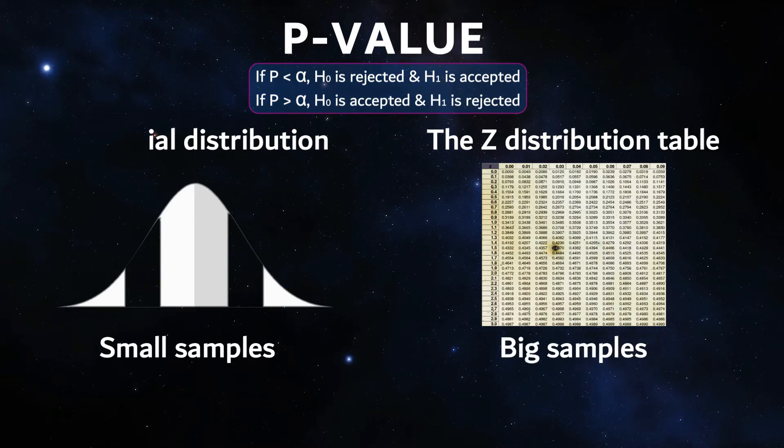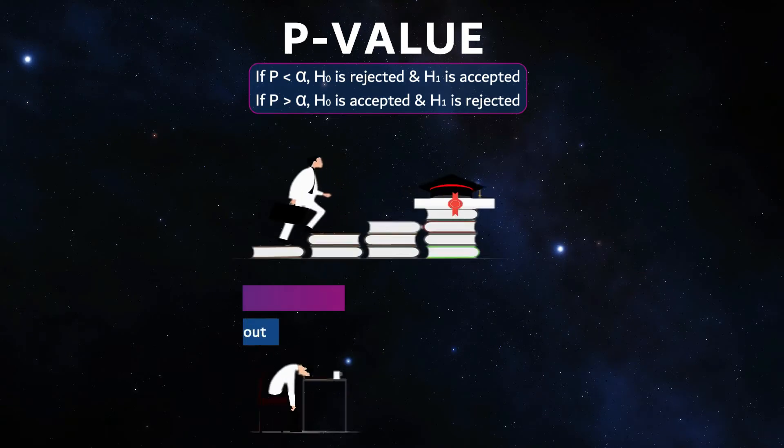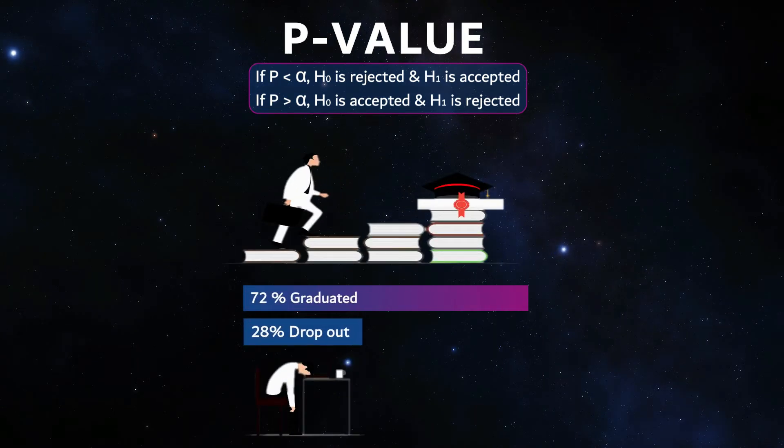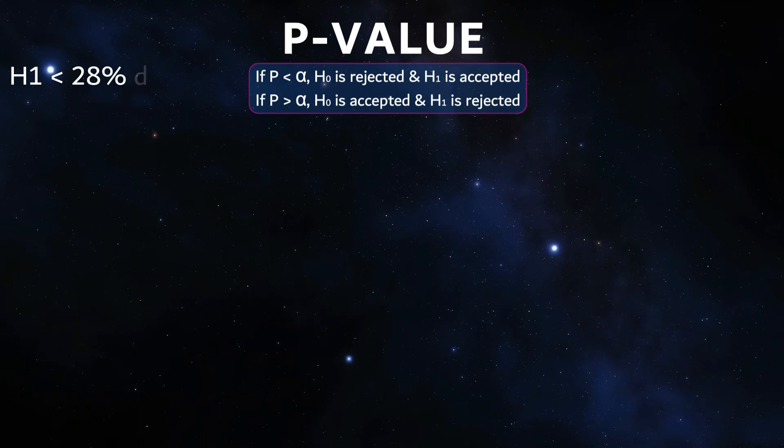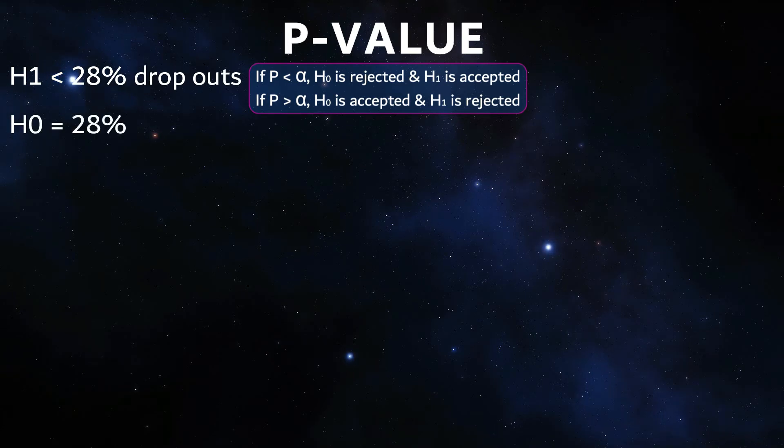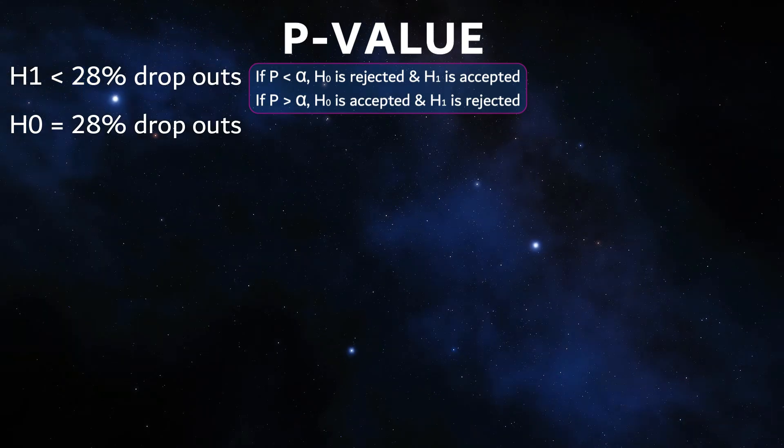At the engineering universities, about 28% of students drop out of their studies before the bachelor's degree and therefore without a degree. In the course of the study, the following hypotheses are made: the alternative hypothesis or H1 says individual student counseling minimizes the dropout rate of students to under 28%. The zero hypothesis or H0 says the number of dropouts is 28%.